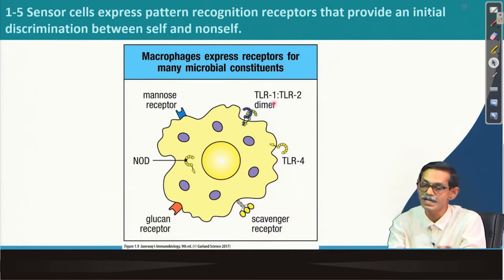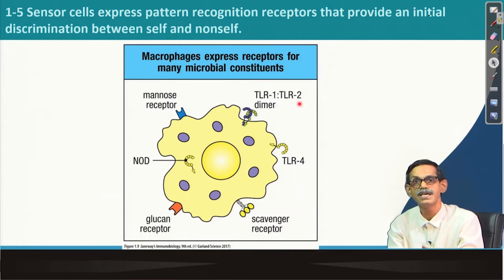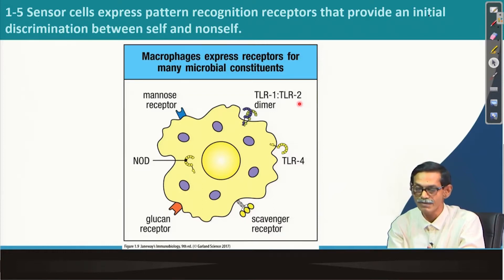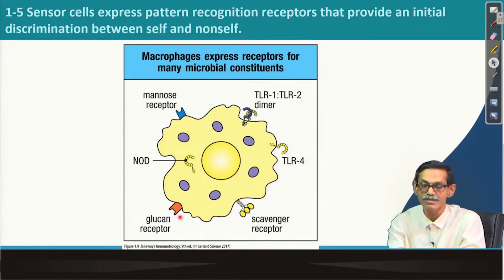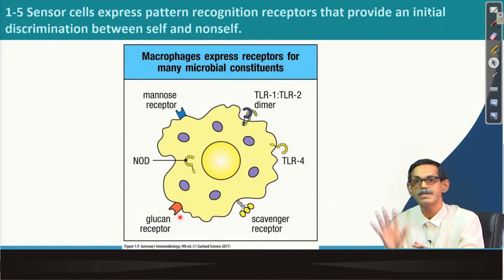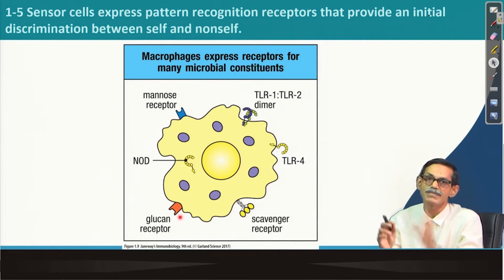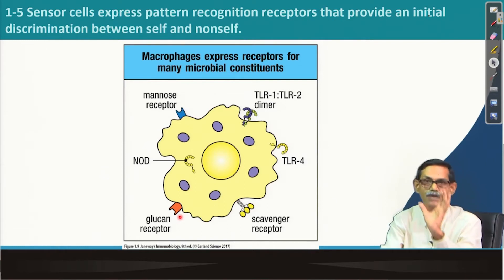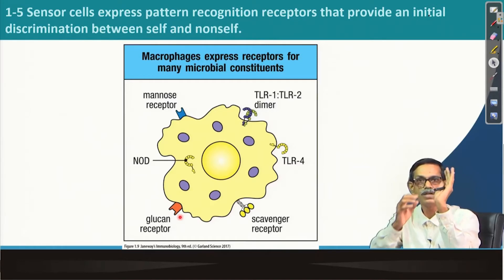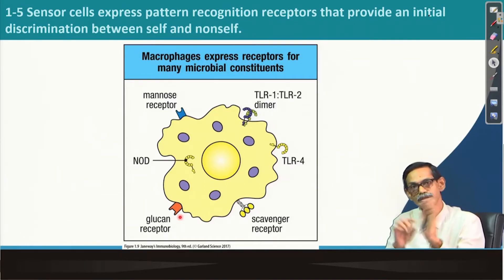Immune cells like macrophages and dendritic cells have a special kind of receptor that recognizes which organisms are pathogenic or foreign. These are mostly TLR 1, TLR 2 — TLR stands for toll-like receptor — TLR 4, and then glucan receptor, mannose receptor. All these receptors are exposed outside the cell, so if anything foreign comes, they can sense it and determine what to do next.